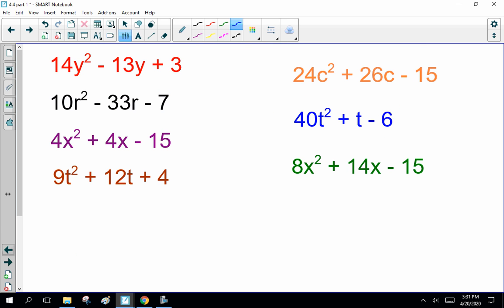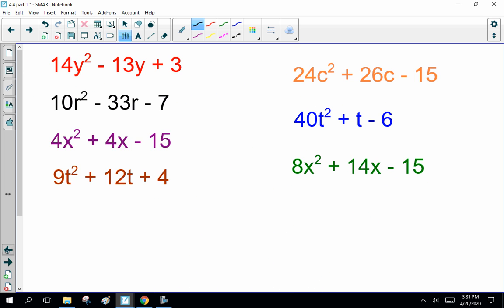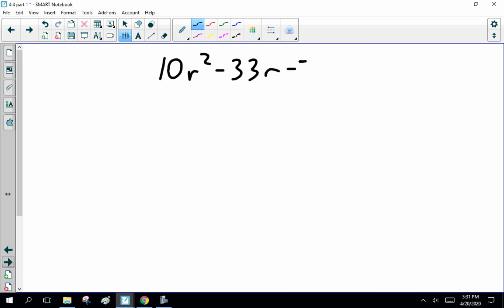So, I'm going to do 10r squared minus 33r minus 7. We can come back and compare answers, okay? Minus 7. Now, before we get going, what are the factors of 10? 1 times 10 and 2 times 7. So, we're at 2 times 5. God, help me. 2 times 5. Now, what are the factors of minus 7? Well, minus 1 times 7 or 1 times minus 7? So, I got a lot of examples to do. Anyway, pause the recording, come back and compare answers.